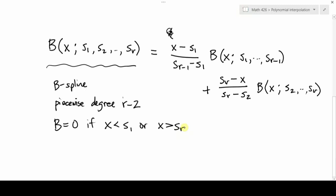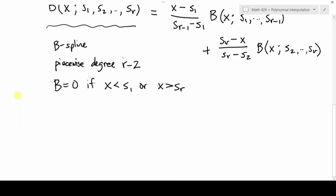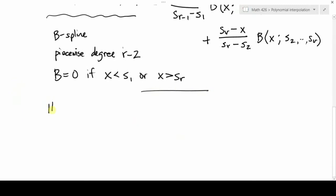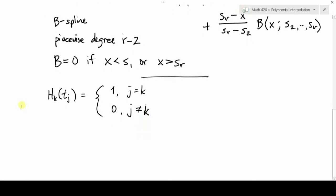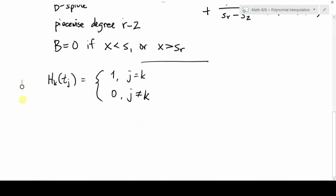Now one thing that we do have to give up, though, once we go past piecewise linear. So you remember that the hat basis had this nice property of cardinality. And that made it, among other things, super easy to write down the piecewise linear interpolant using just the data values. But now we don't get this property anymore.